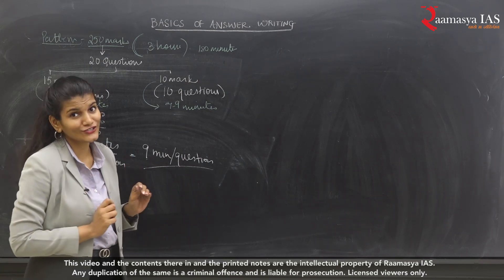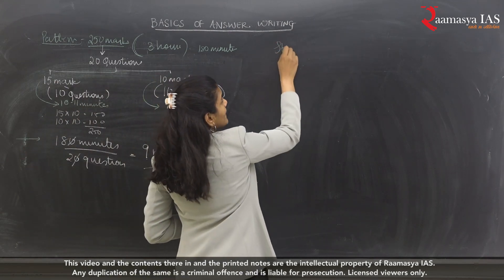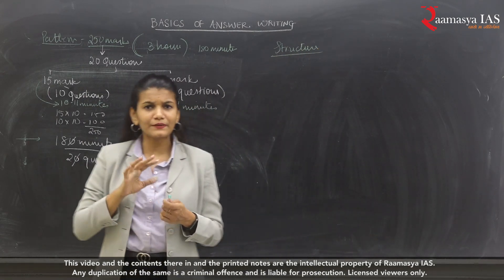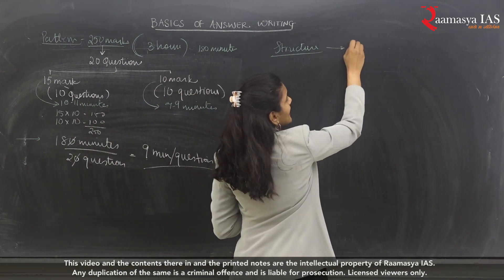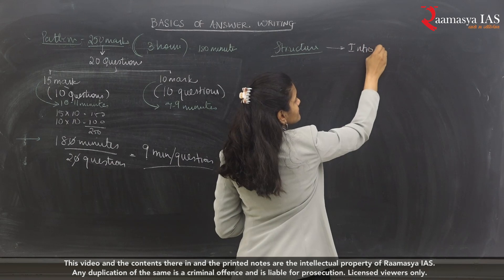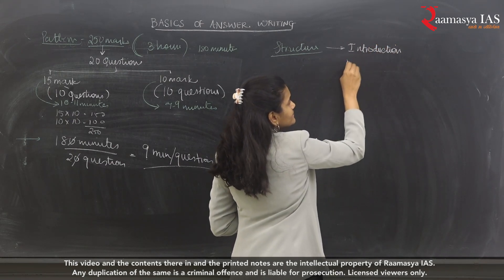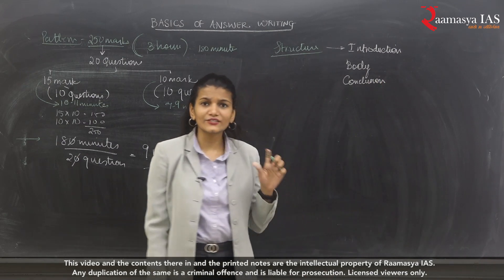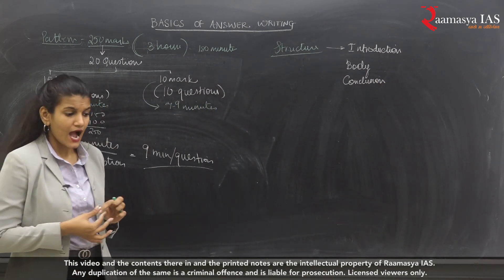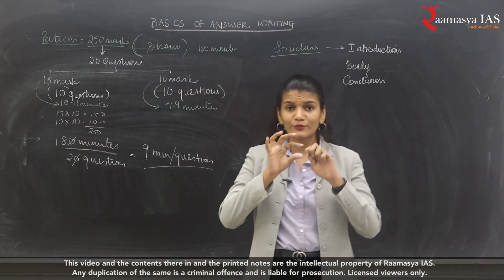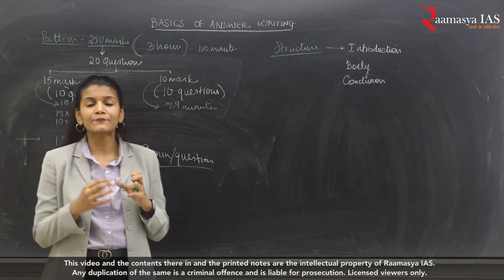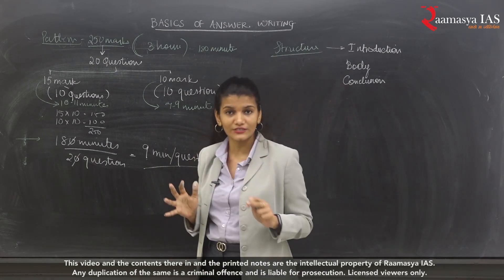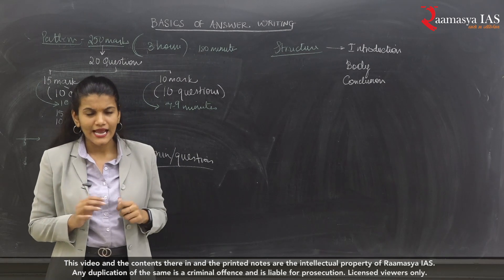Now let's understand the structure of your answer. When you talk about the structure of an answer, we understand the basic structure of mains answer writing in terms of Introduction, Body or Main Body, and Conclusion. You have to introduce the question properly. The main body is generally the major part — around 80% of the answer. And then you have your conclusion.